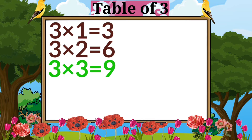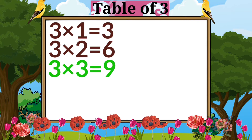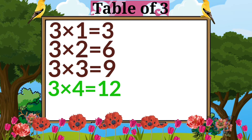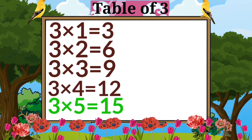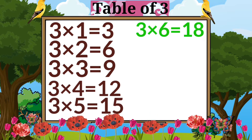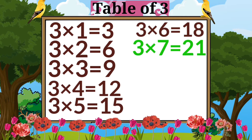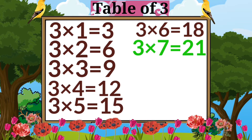Three threes are nine. Three fours are twelve. Three fives are fifteen. Three sixes are eighteen. Three sevens are twenty-one.